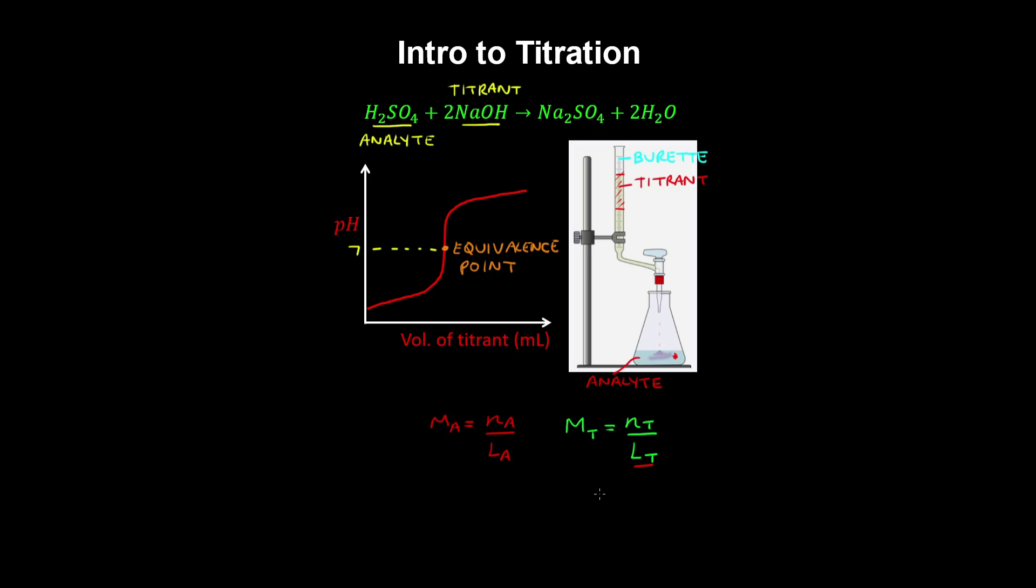The volume lost from the burette and the molarity of the titrant is known. From this you can calculate the number of moles of the titrant in the solution and then use the mole ratios in this reaction to calculate the number of moles of the analyte.